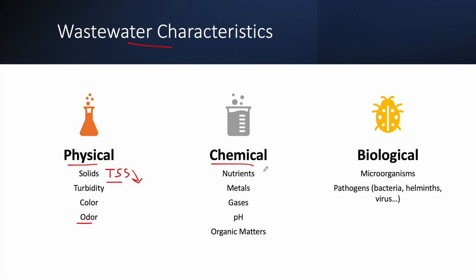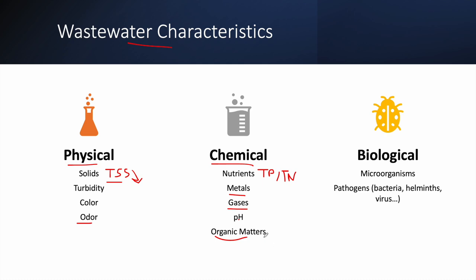Moving to the chemical characteristics: raw sewage has high levels of nutrients such as total phosphorus and total nitrogen that we need to highly reduce. It can also contain metals and gases like methane. The pH must be a neutral pH — a value around seven.